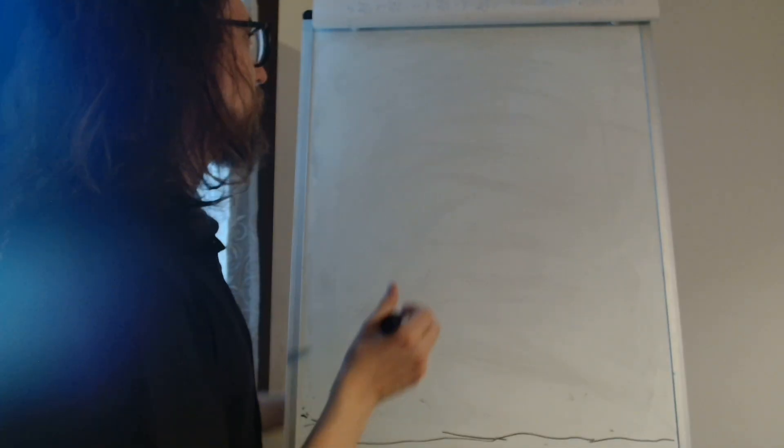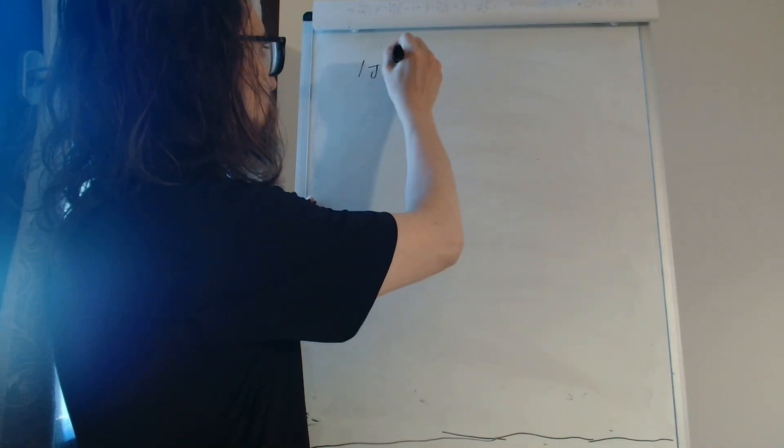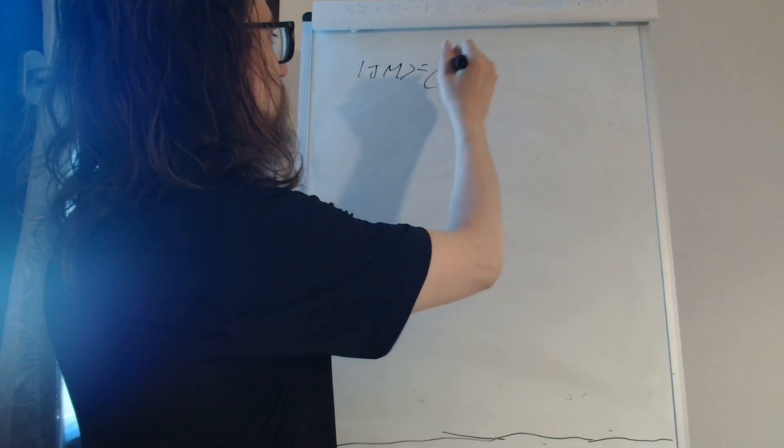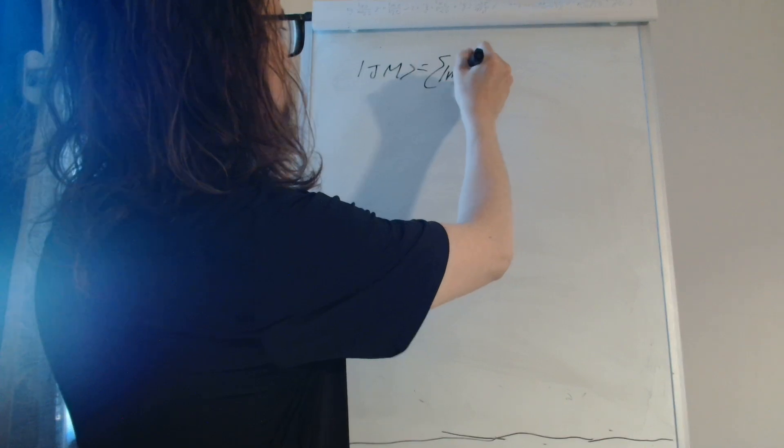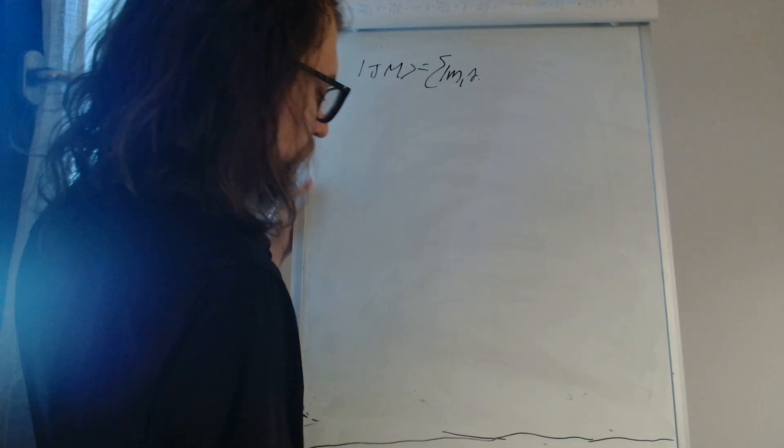Let's expand J in that basis. We will have summation over summation of J1, M1, J2, M2.